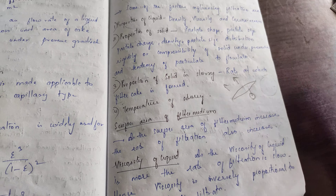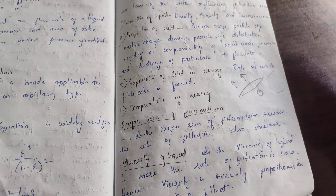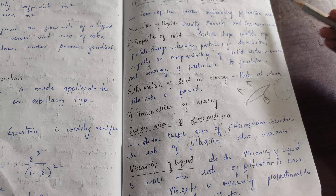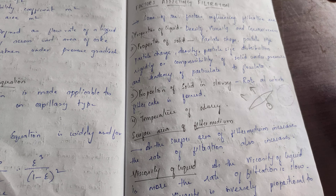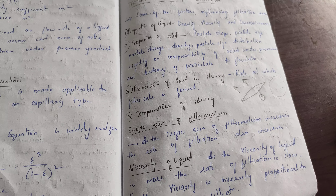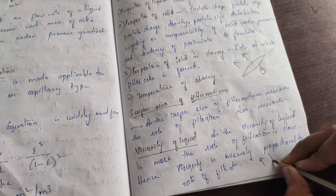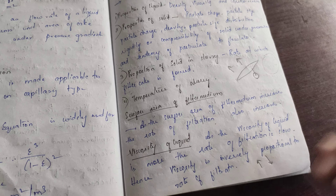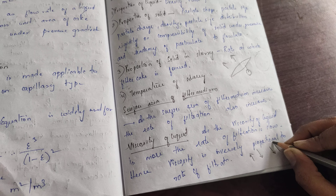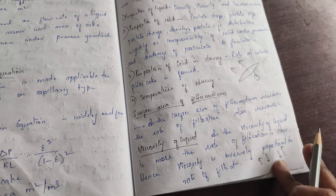As the viscosity of the liquid increases, the rate of filtration decreases. If viscosity is less, filtration proceeds easily. Surface area and viscosity are therefore key factors in determining filtration rate.